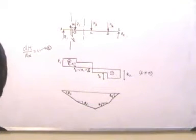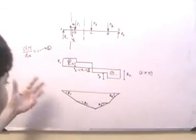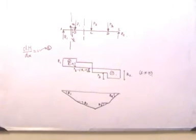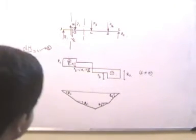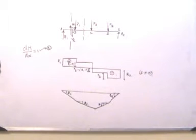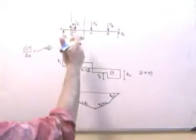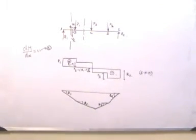In the region A to B, there is a constant value of shear force, and this value is essentially the slope of the bending moment diagram. Since it is constant, the bending moment diagram is a straight line with a definite slope. At point B, the shear force is still positive so the bending moment continues to increase, but at a slower pace. We know that R1 minus P1 is less than R1, so the slope at B will be less than the slope at A, confirming that theta 2 is less than theta 1.